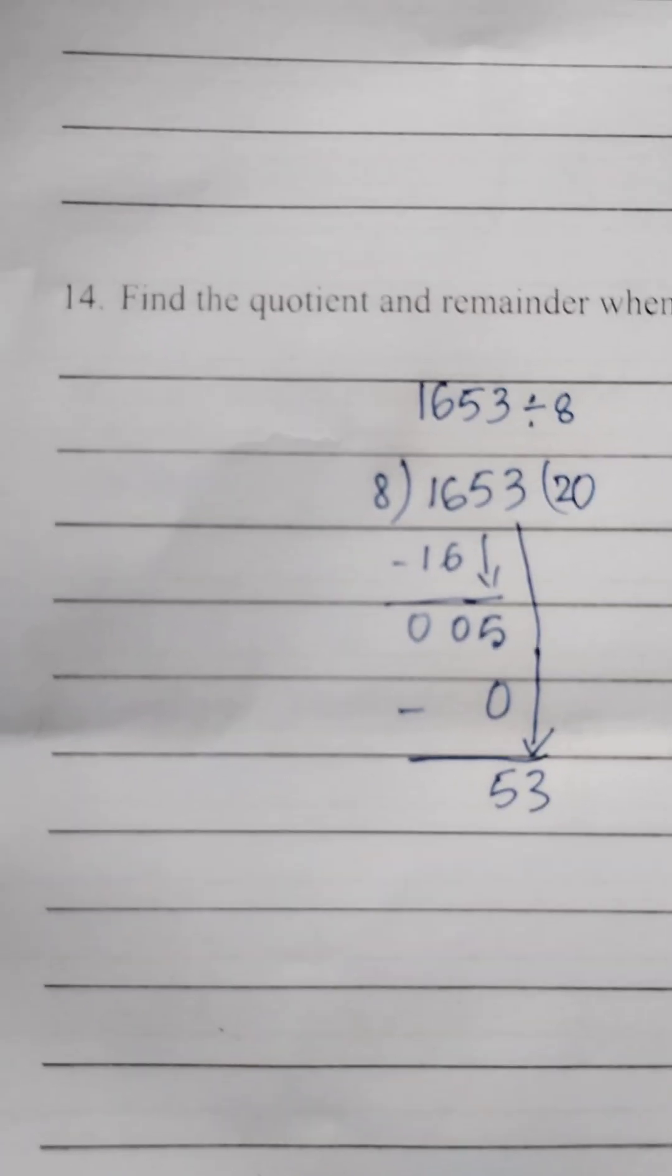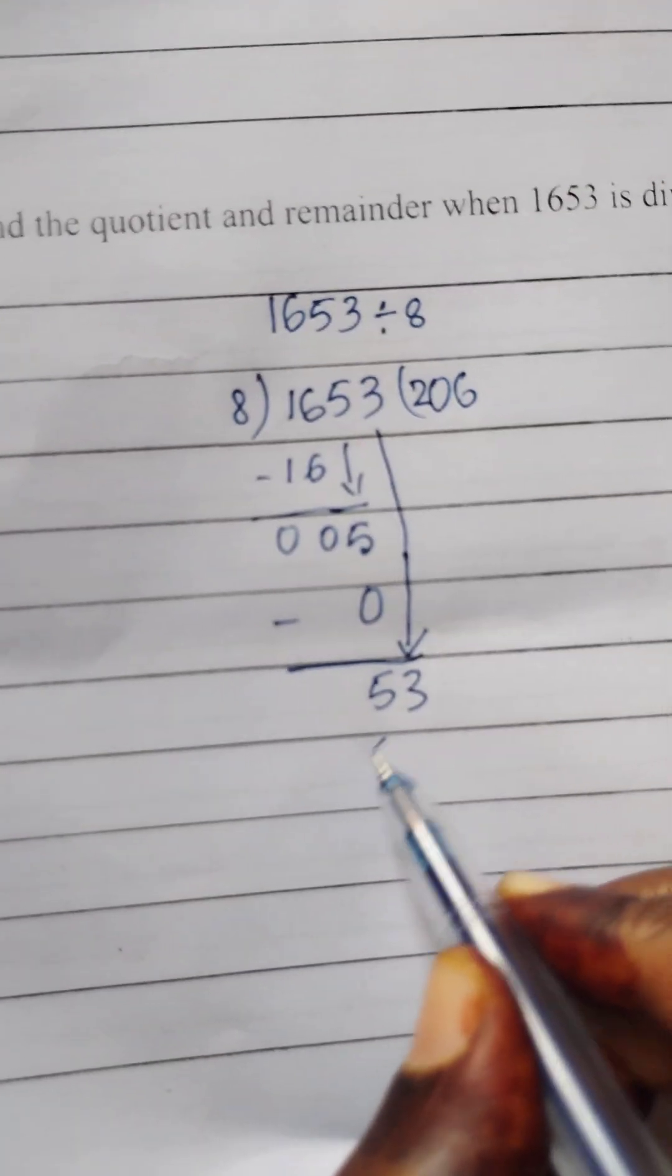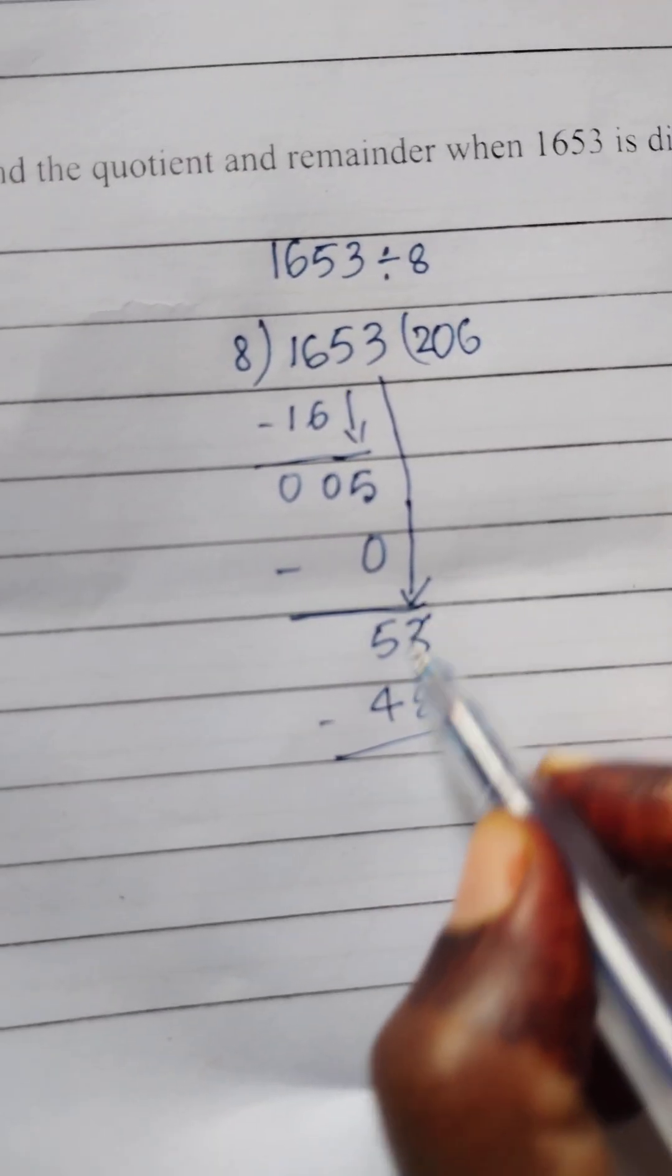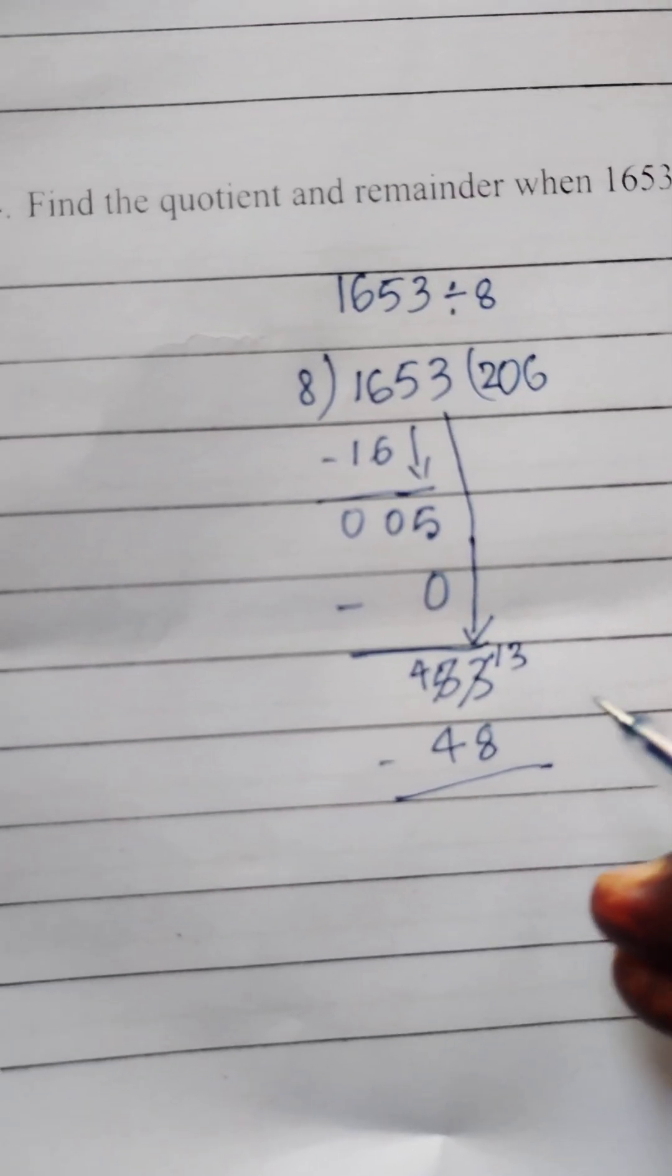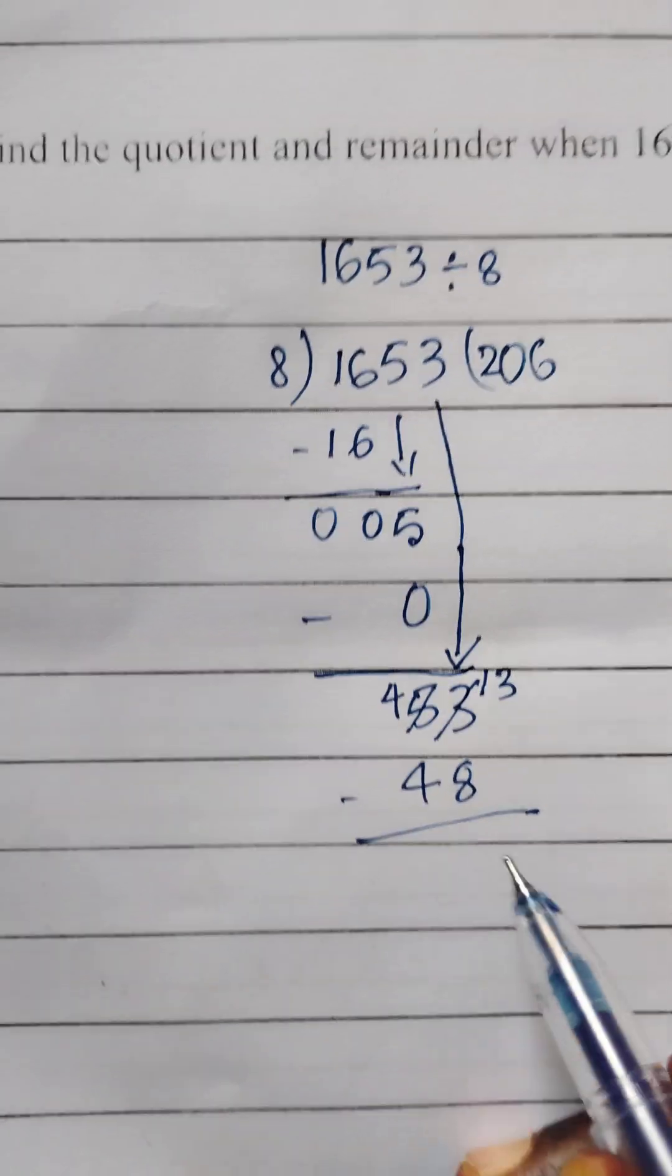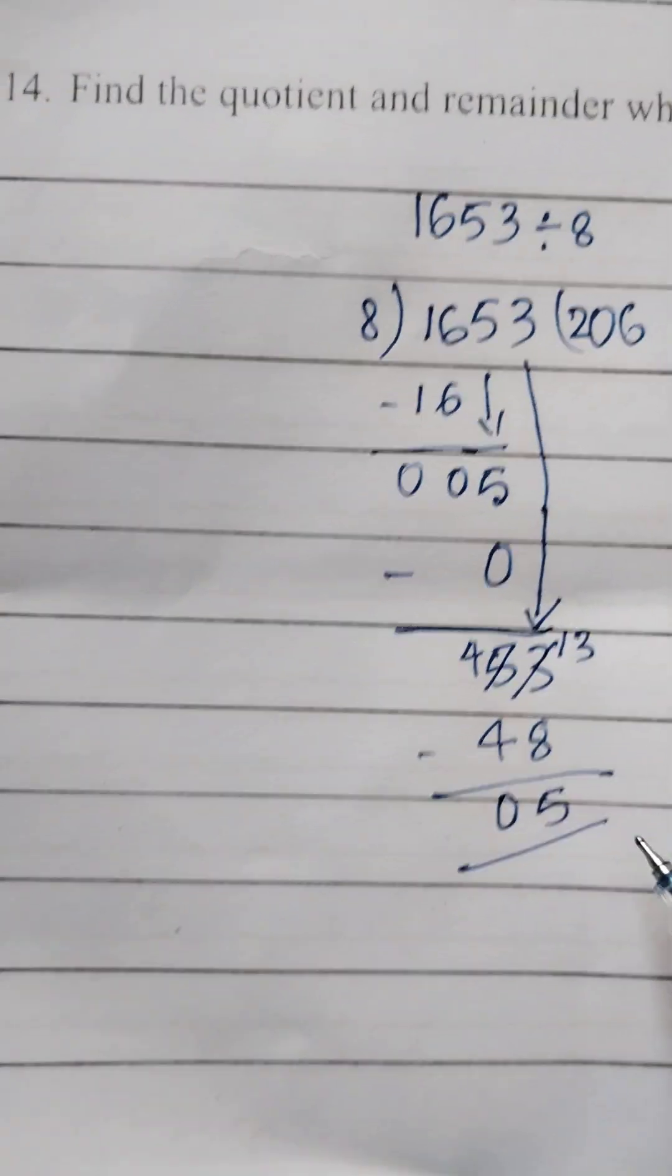We have 56. You can take 8 sixes, 48. Do the minus. Can't go. Take 13. 13 minus 8. 13 minus 8, 5. 4 minus 4, 0. So here we have quotient is 206 and remainder is 5. So this is the answer.